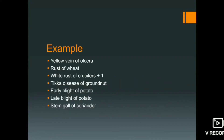Hi guys, today we are going to study symptoms of plant disease in plants. As we discussed earlier some symptoms like rust, smut, and fruiting body, today we are going to discuss symptoms that are generally asked in exams, such as yellowening of okra, rust of wheat, white rust of crucifer, tikka disease of groundnut, early blight of potato, late blight of potato, and stem gall of coriander. These have been asked in UPSC from 2011 to 2019.